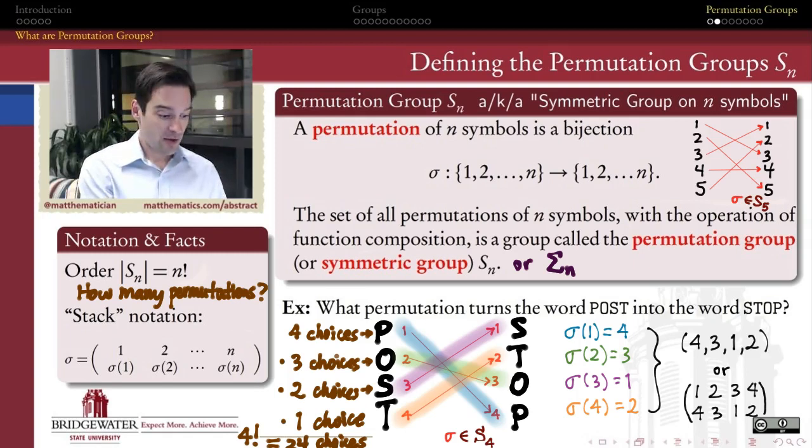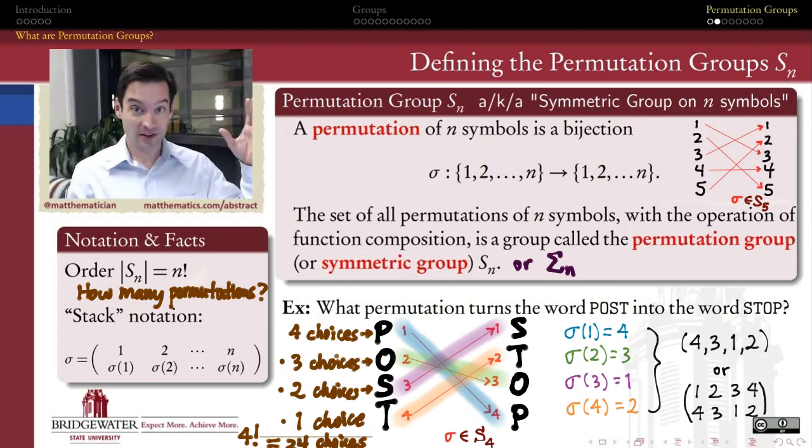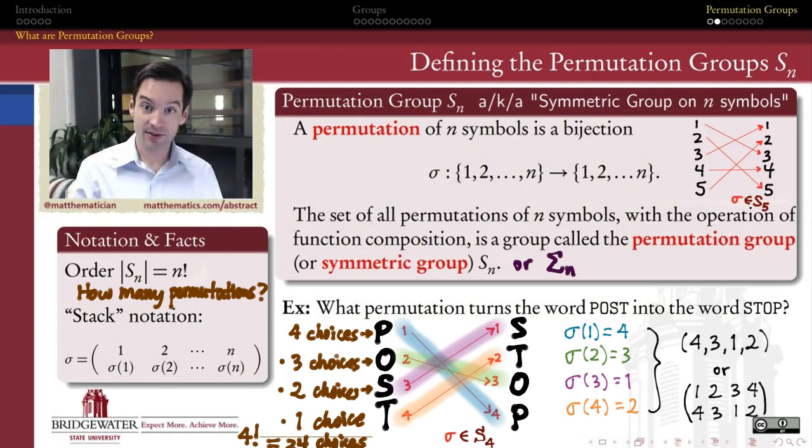So the symmetric groups S_n are finite groups. They happen to be fairly large finite groups. As n gets larger, the number of permutations grows factorially, which is extremely quickly. By the time we get to 10 symbols, we already have over 3 million elements in our group.